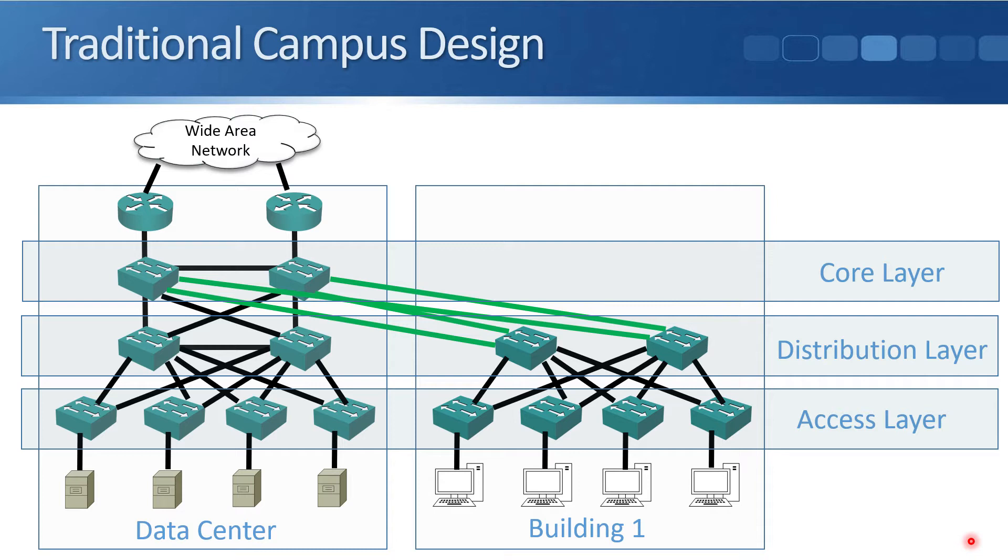What I mean by north and southbound traffic flows is where the traffic is mainly flowing up and down. So traffic would be going up and down the data center and then down to the clients in the other buildings.